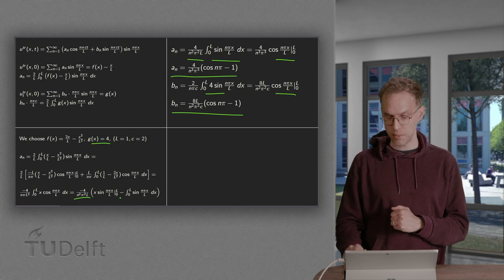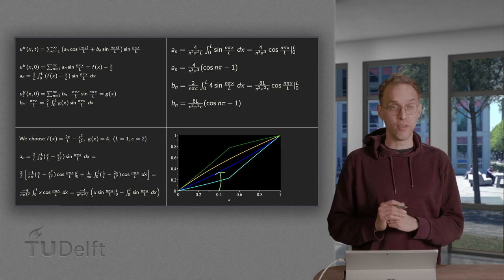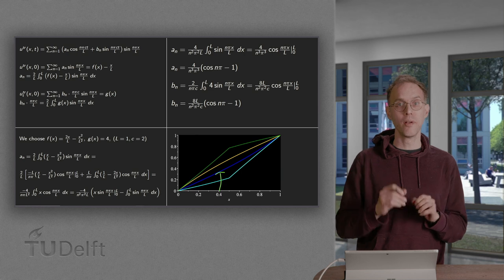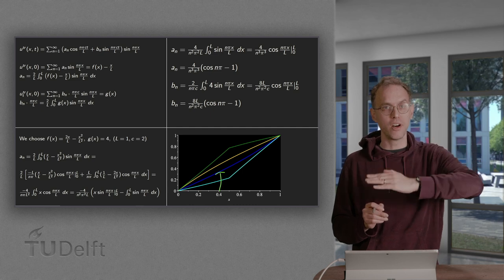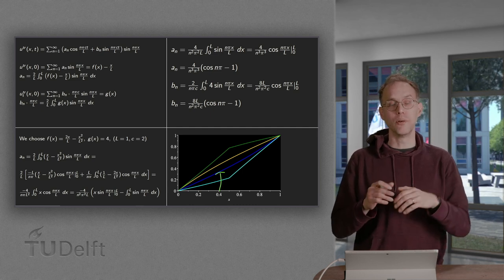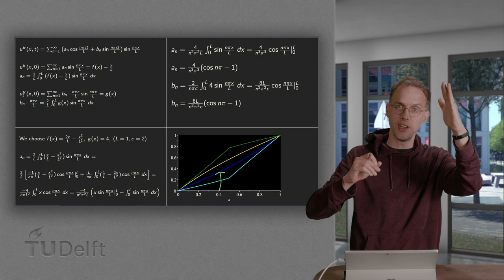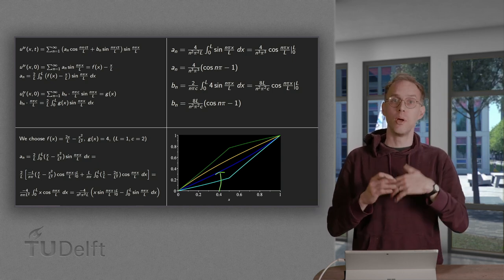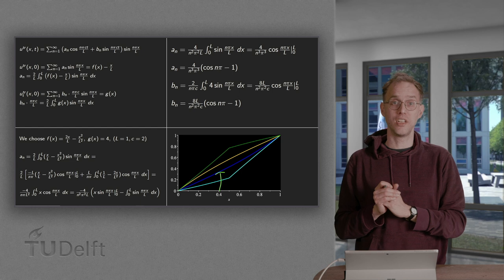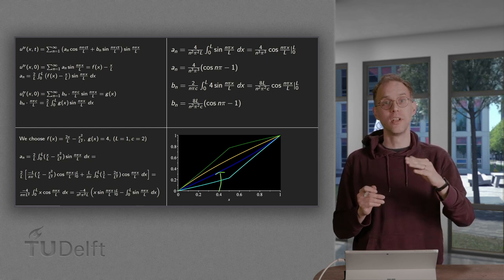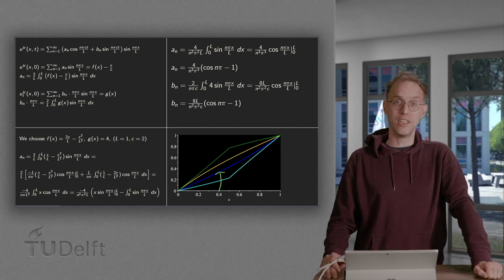Looking at the plot, the blue line is the equilibrium solution x/l. We can see that with the given initial condition, the solution waves around this equilibrium solution. Recall that for the heat equation we had an equilibrium solution that we eventually approached. Here it is different: there is no dissipation in this problem, so we just have waves forever around the equilibrium solution. That is the key difference from the heat equation.